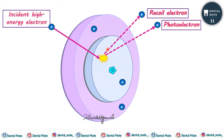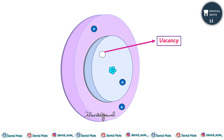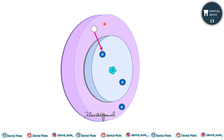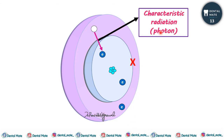An electron from the outer orbital fills this vacancy and a photon is emitted. Since the outer orbital electron has filled the inner vacancy, the energy difference between the two shells is released as a photon. The photon is emitted with energy equal to the difference of the energy levels between the two shells. If the inner shell has X amount of energy and the outer shell has Y amount of energy, the energy of the emitted photon would be X minus Y.